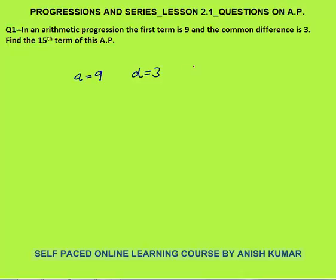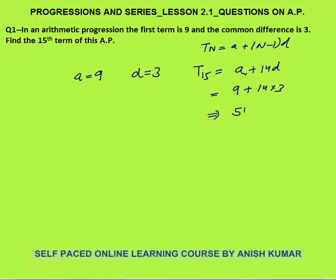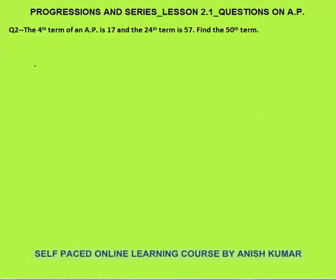We need to find the 15th term. We know term number n = a + (n−1)d, so term number 15 = a + 14d. Substituting a = 9 and d = 3: 14 × 3 = 42, plus 9 gives 51 as the final answer.